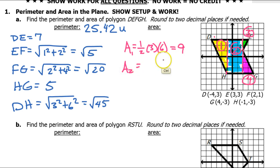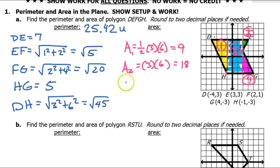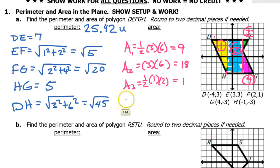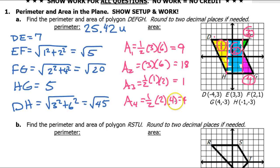Area two is a rectangle. The area of a rectangle is base times height, so that's just 3 times 6, which is 18. Area three is another triangle — one half base times height. The base is 1 and the height is 2, so that's just 1. Finally, area four is another triangle — one half base times height. The base is 2 and the height is 4, so that is 4.